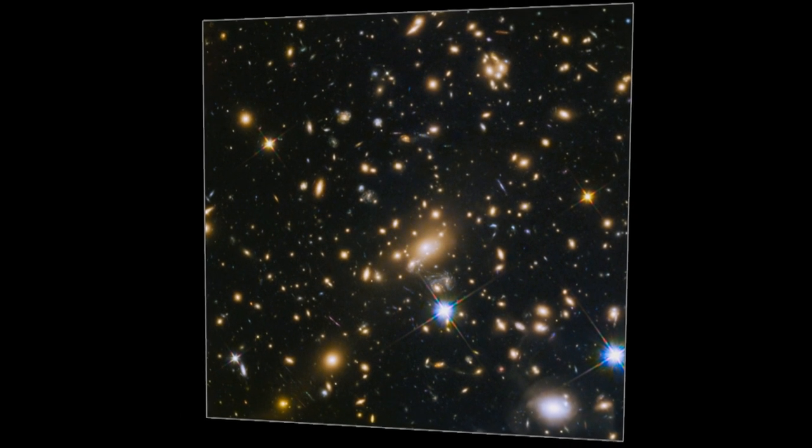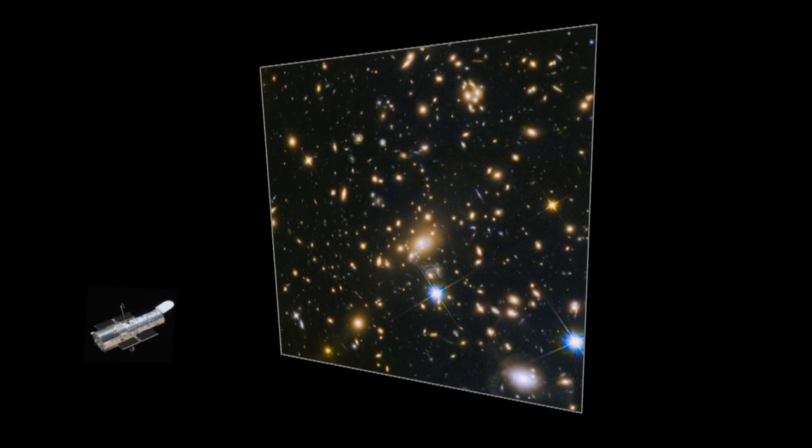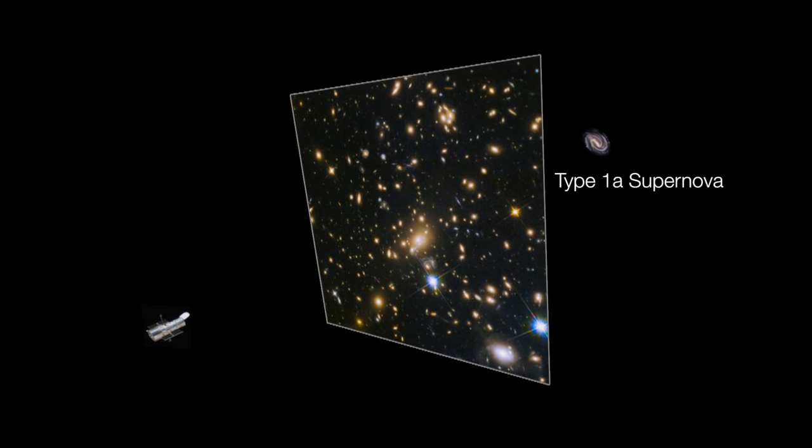The exploding object, we think, is a special type of exploding star called a type 1a supernova. These are famous for Brian Schmidt's discovery of the accelerating universe, and we can use these to measure the properties of the universe.